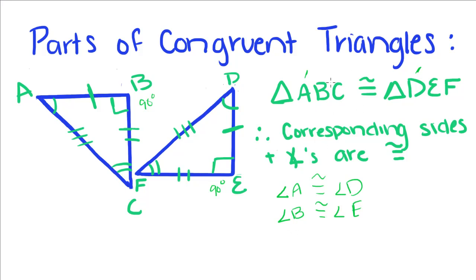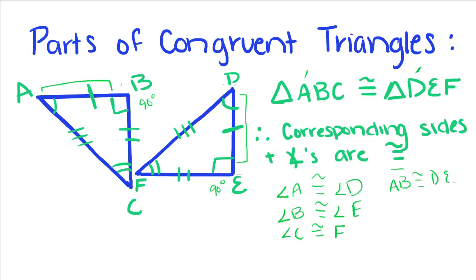And angle C, this last angle, has to be congruent with angle F, which we know is true. So not just the angles — corresponding angles are congruent — but the corresponding sides also are congruent if these triangles are congruent. So AB is congruent to DE, BC is congruent with EF, and AC is congruent to DF.